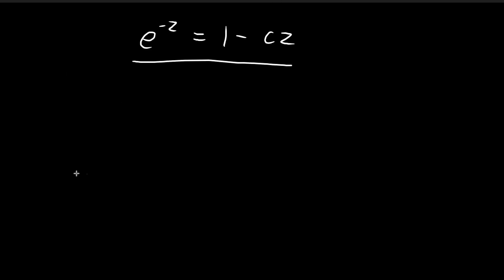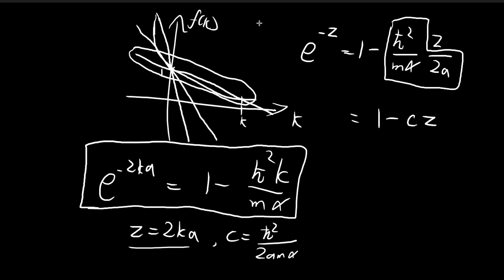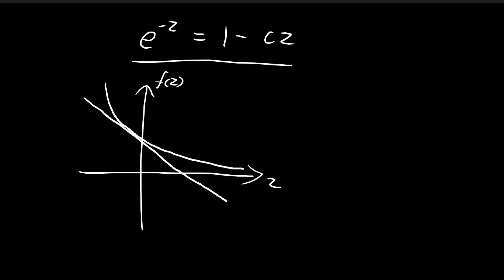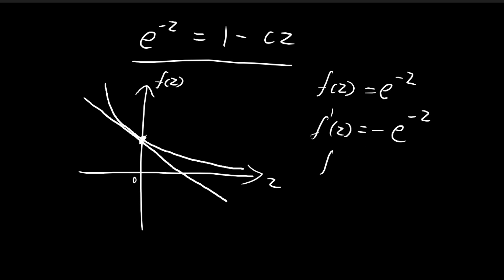Now we analyze this simpler form to find conditions for a meaningful intersection. Graphing e to the power of negative z on the z-axis, we look for where the linear graph 1 − cz is tangent to this curve. The derivative of e to the power of negative z is negative e to the power of negative z, and evaluated at z = 0 this gives a slope of negative 1. So when the linear graph is tangent to the exponential at z = 0, the slope of the linear graph is exactly negative 1.